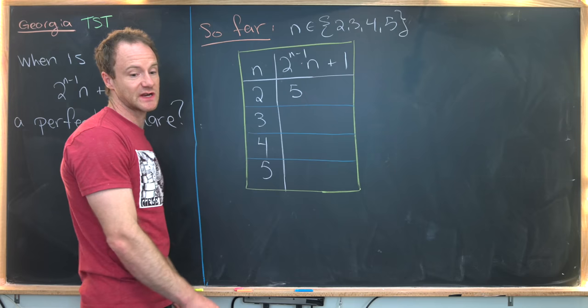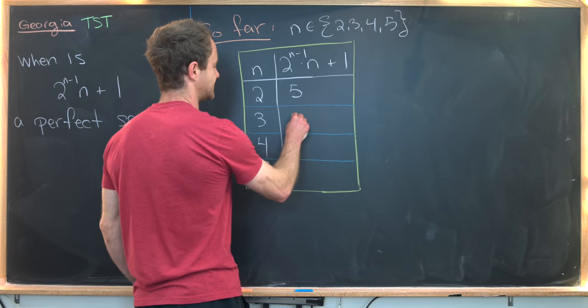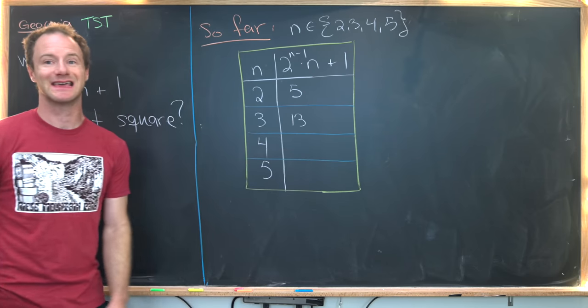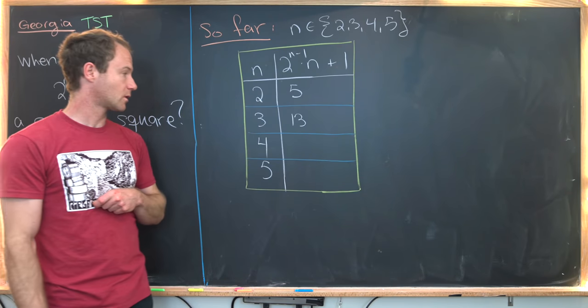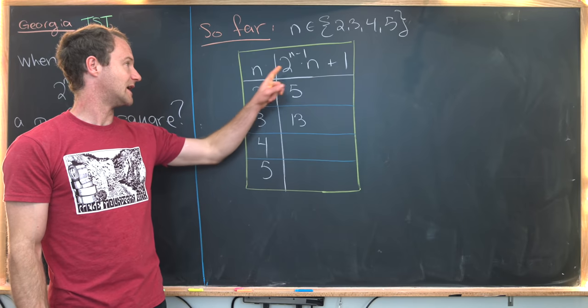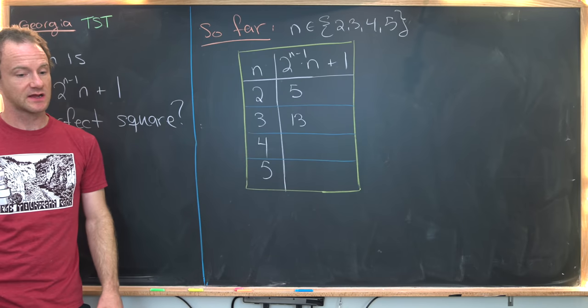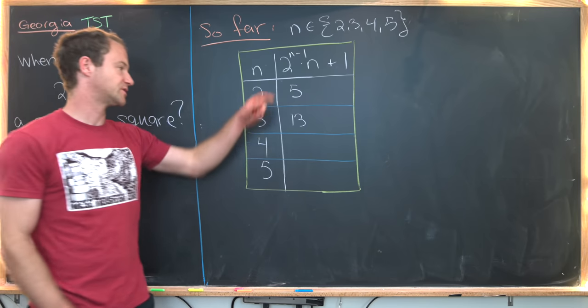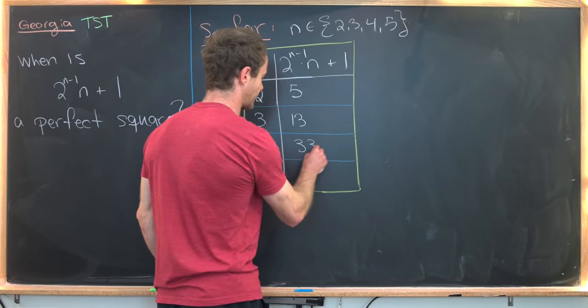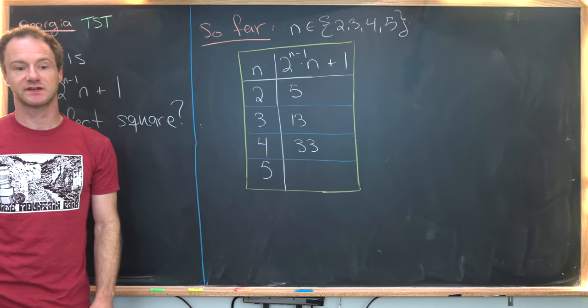Next, if we have n = 3, you can work it out and you see that you get 13. Again, not a perfect square. If n equals 4, we have 2³ × 5, that is 8 × 5, which is 40. Again, not a perfect square.